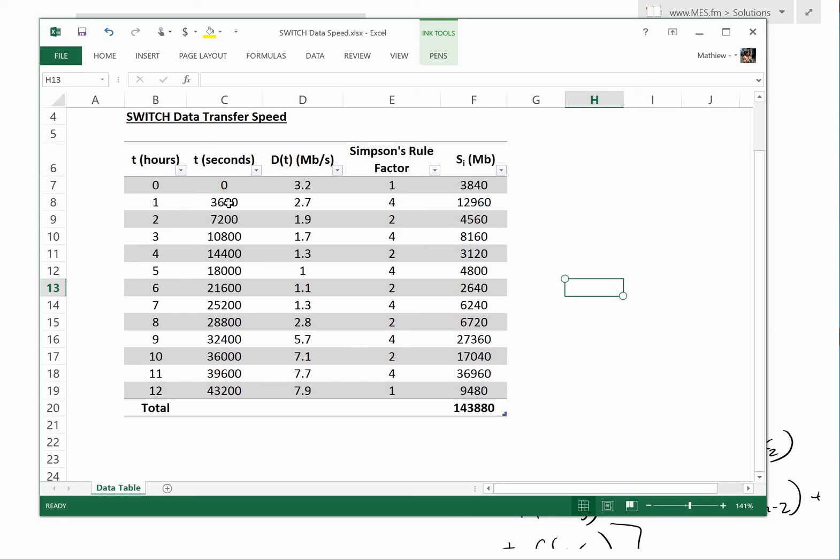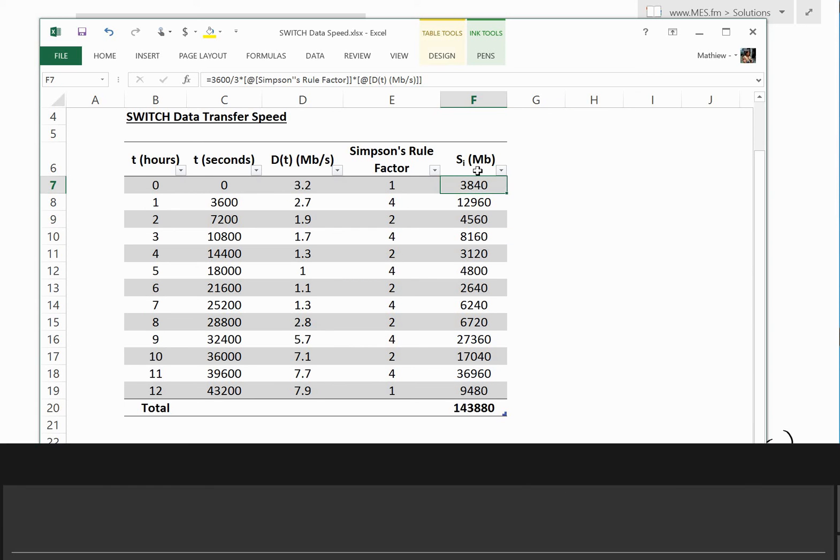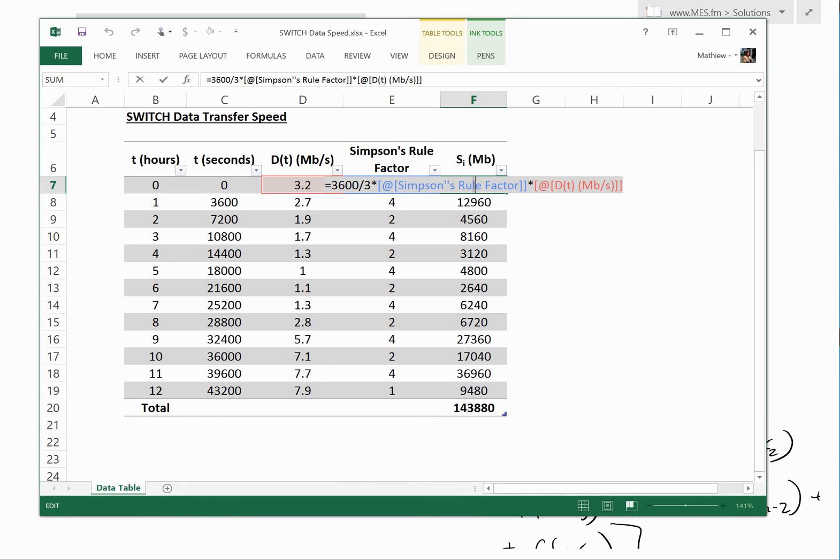And here I've quickly added the Simpson's rule factor just to the table, so each of these factors here, 1, 4, 2, 4, 2, 4, and these are the x₀, x₁, etc., x₁₂, and the corresponding seconds in each one. And also here is the si, what I've called this as each term, so if we double click this, what we have right here is basically the formula is just 3600 divided by 3, so that's our delta x or delta t, times by the Simpson's rule factor, and then times by D(t) right there. So close that, and then we get all these terms, and then when you finally sum this up, and again follow these 1, 4, 2, 4, all the way to 4, 1, we have 143800 total megabits.